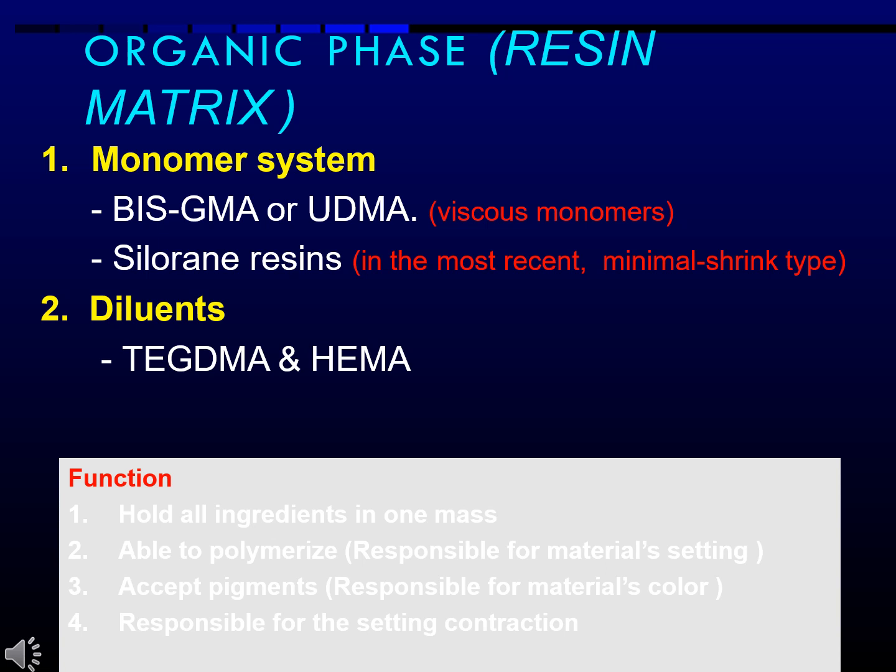The Organic Phase consists of the Resin Matrix Monomer System, which includes viscous monomers such as Bis-GMA or UDMA. In more recent formulations, Silurane Resins and Minimal-Shrink types are used. Diluents such as TEGMA and HEMA help hold all ingredients in one mass, allow polymerization, are responsible for the material's setting, and are responsible for setting contraction. Pigments are responsible for the material's color.